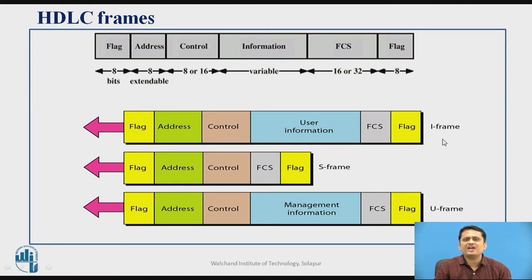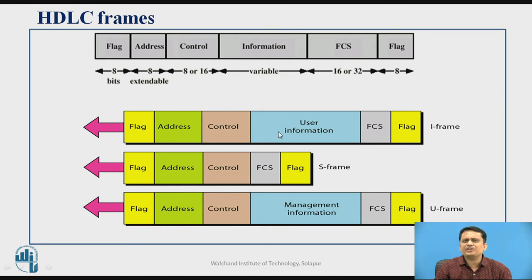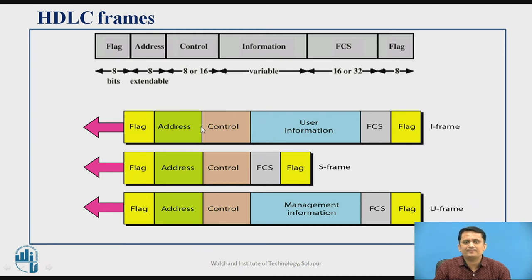Comparing the general format with the I-frame, almost all fields are present. In the S-frame, the information field is not present. In the U-frame, the information field is present but carries management information. The information field holds user data from the network layer. Headers and fields are appended to form the complete HDLC frame: flag, address, control, user information, FCS, and flag.